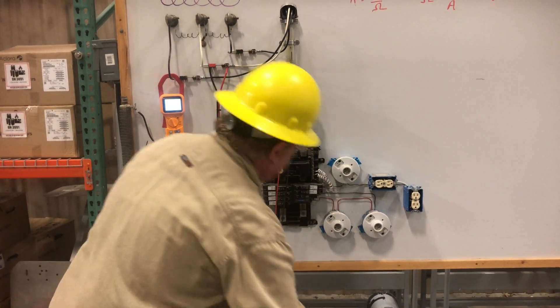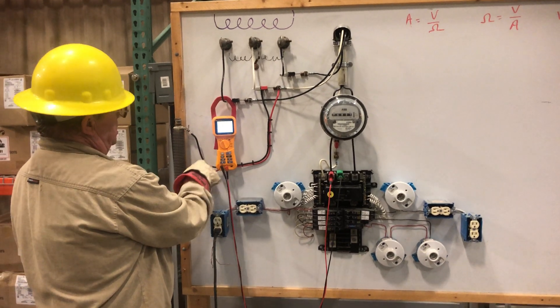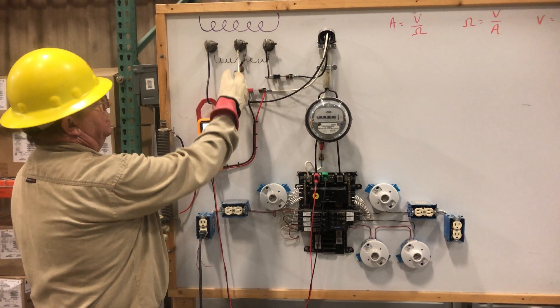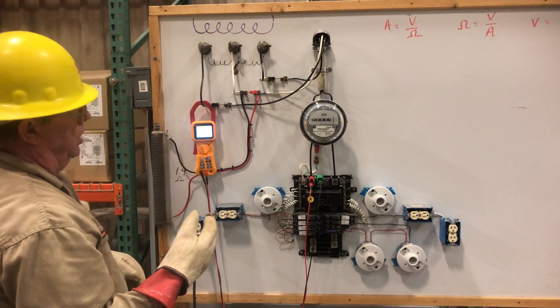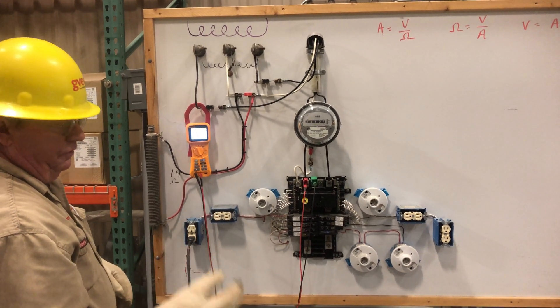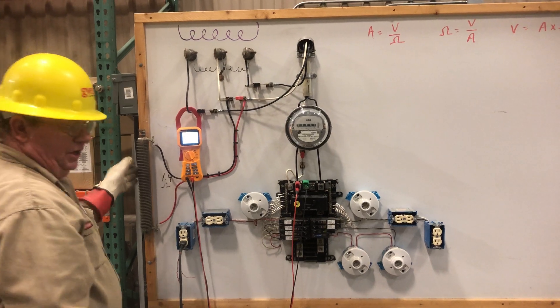Now we're going to add this 1.4 ohm resistor and create a resistive load connector right here. You saw the voltage drop fall to 116.4. Now we're going to put that exact same load, but we have a resistive connector now.